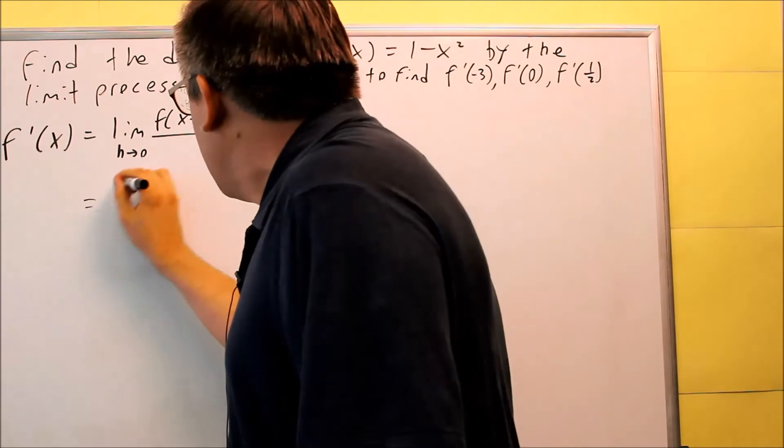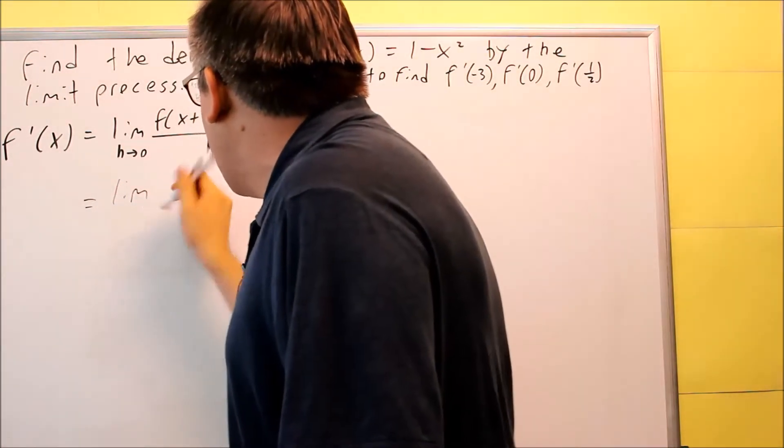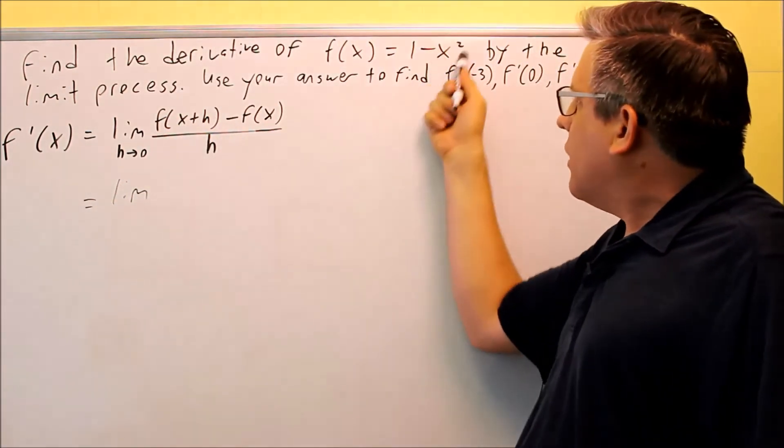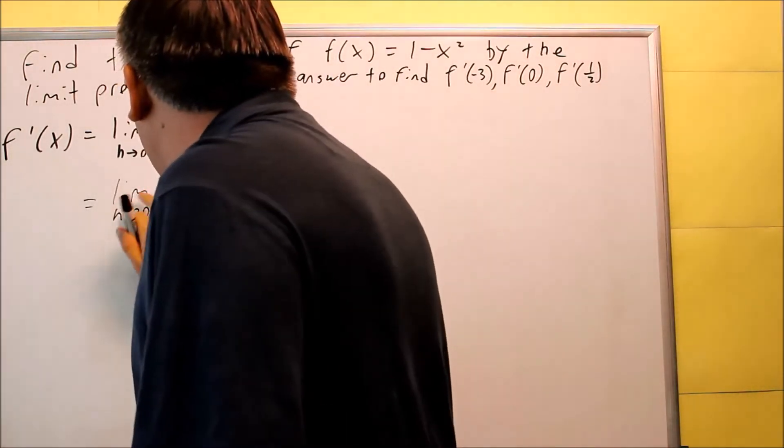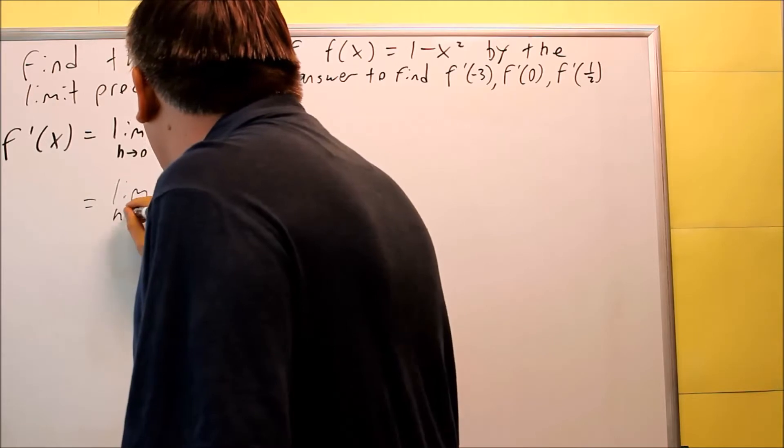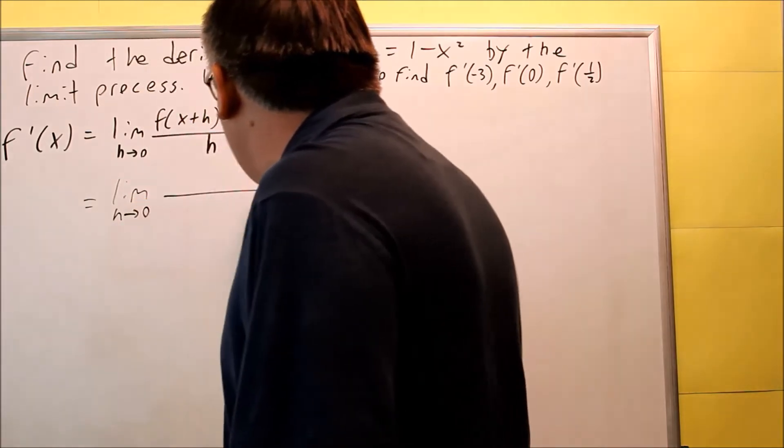We're going to put in x plus h in for f. So we're going to put that into here in place of the x. We'll write the rest of it out: limit as h goes to 0, and then we're going to put in x plus h.